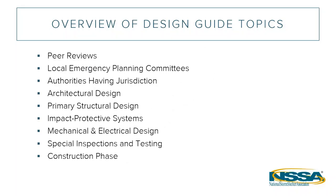The design guide will cover topics like peer reviews, local emergency planning committees, authorities having jurisdiction and their role. There is some conversation that the whole design guide may be written so that a design professional could walk into an AHJ's office and request approval to follow everything recommended in the document — specifically when interpreting the code — and with one simple yes, the AHJ could buy in with all of the recommended code interpretations. Other topics include architectural design, primary structural design, impact protective systems, mechanical and electrical design, special inspections and testing, and construction phase considerations.